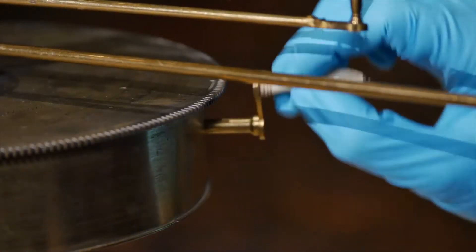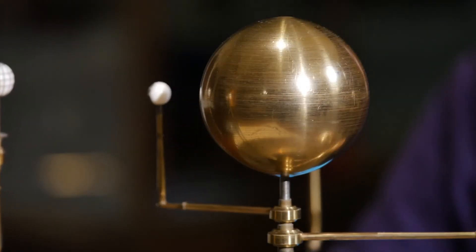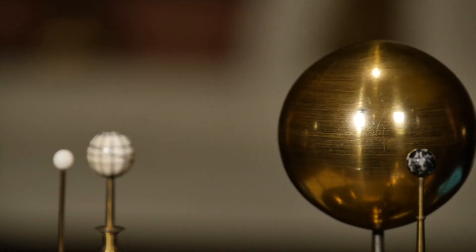When this handle is turned, an intricate geared mechanism causes the planets to rotate around the Sun. Each planet moves at its own speed according to the mass and distance from the Sun of the actual planet.